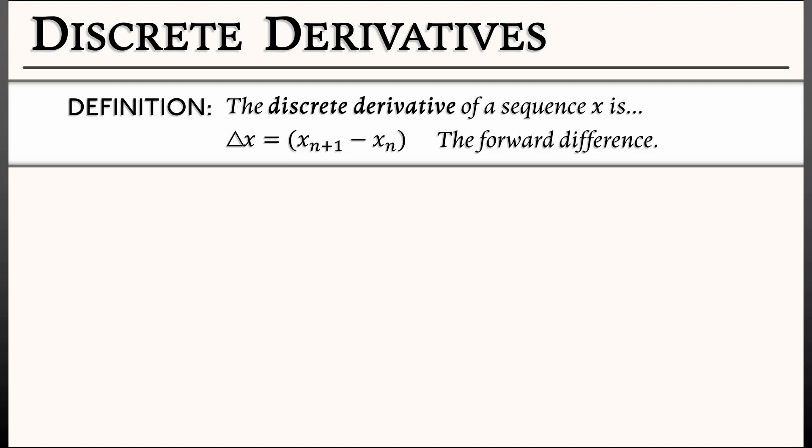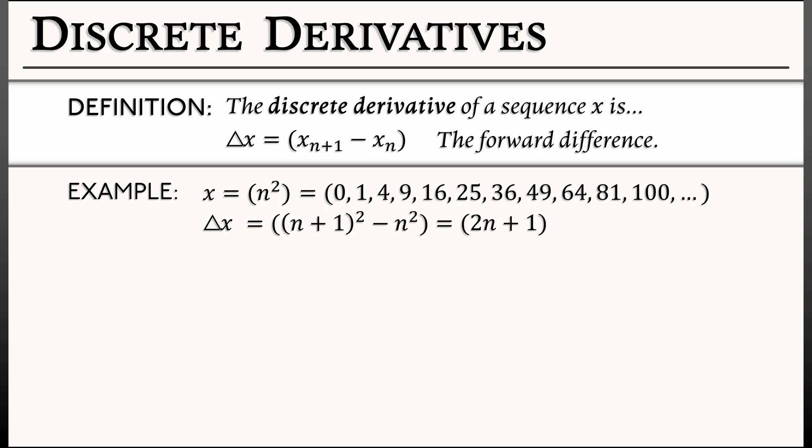Let's take a look at an example. Consider the quadratic function n squared. So the entries are 0, 1 squared, 2 squared, 3 squared, etc. Now, if I look at the derivative of that, the individual terms are quantity n plus 1 squared minus n squared. Algebraically, I can multiply that out. I get n squared plus 2n plus 1 minus n squared. Simplify that. That gives me the sequence 2n plus 1.